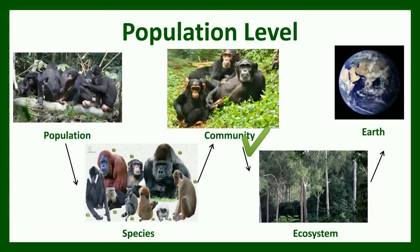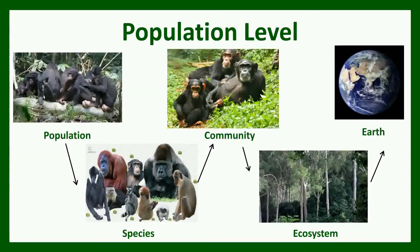Next is the community, or biological community. A biological community is when all the populations of different species living together in one place — that is called a biological community. To clarify: a population is a group of individual organisms of the same species in the same place; a species is a population of a particular kind of organism that are similar in appearance; and a biological community consists of different kinds of species populations living together in one place.